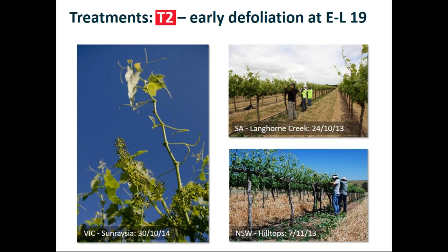All of these vines were basically Australian sprawl, either single or double cordon. The control T1 treatment was just the site standard practice which we didn't alter. Treatment T2 was the early defoliation, done at EL stage 19 which is just prior to cap fall, and involved hand pulling off all of the fully expanded leaves - around 80% of the leaf area at that point.